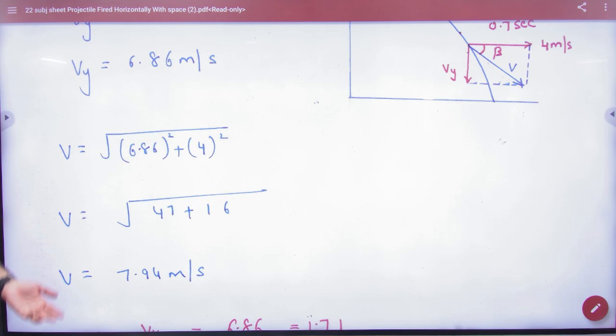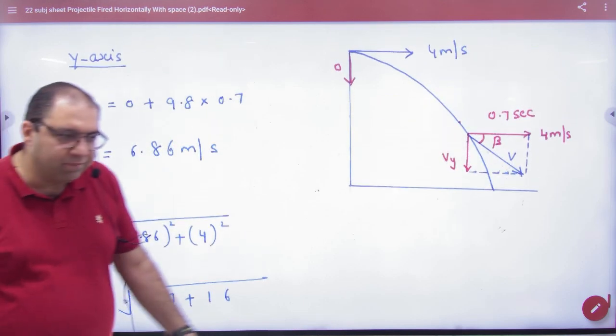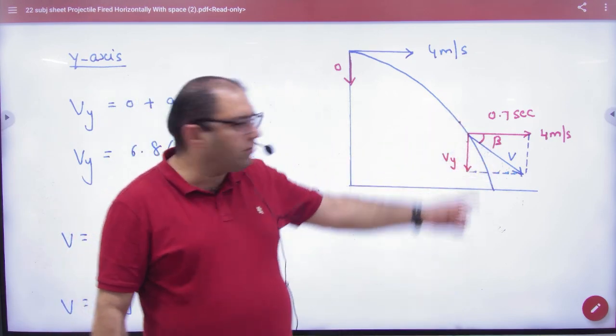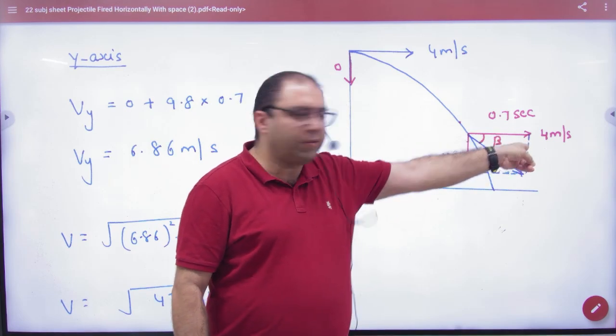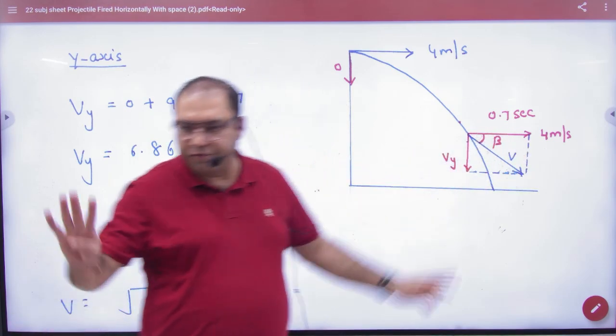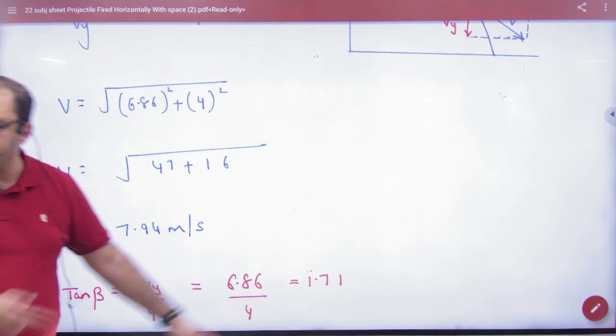Now because velocity is a vector, so you expect you will have direction also. So in this parallelogram, direction beta, tan beta will be equal to vy divided by vx. vy ki value you will have taken out. vx ki value 4 is. So you will have vy divided by vx here. Tan inverse 1.71 answer.